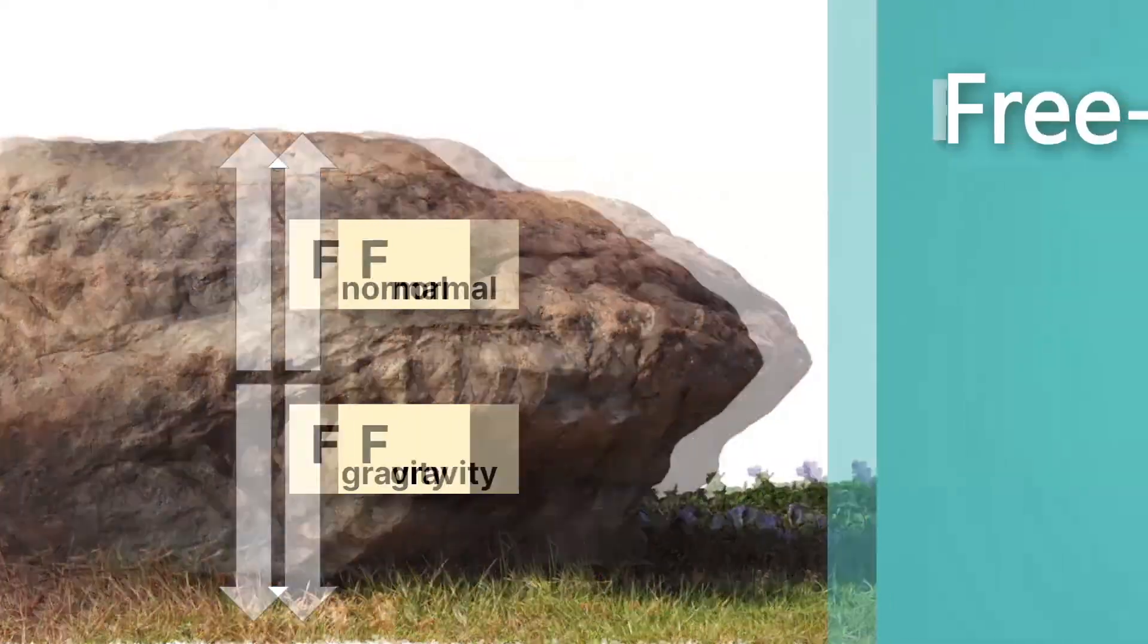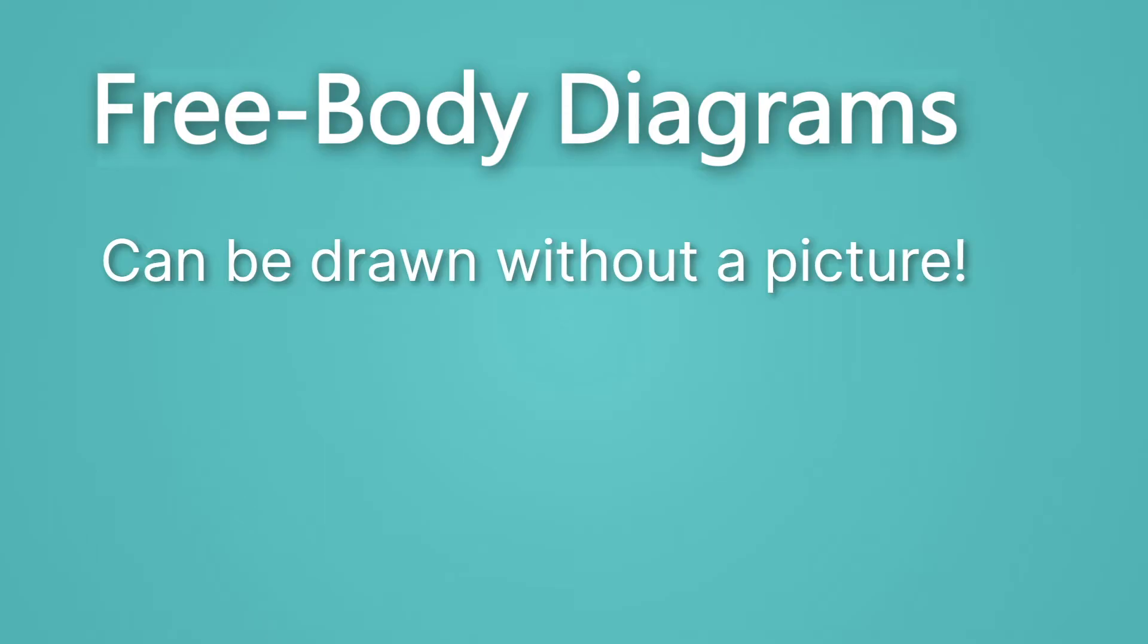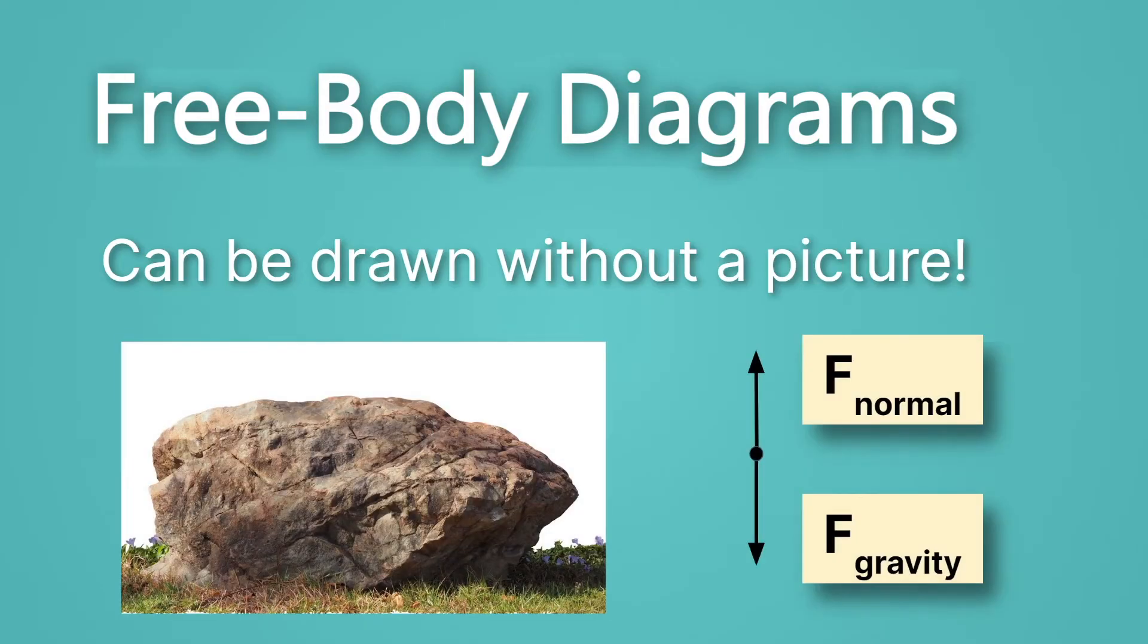Okay, so let's think about this free body diagram a little more carefully. One thing to know is that it can be drawn without a picture. You don't need a picture. So sometimes we draw it on top of a picture. It makes it a little more clear. But when you're drawing these on your paper, you won't have a picture. It'll look like this.